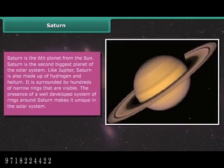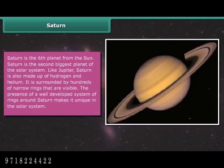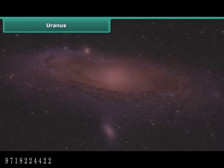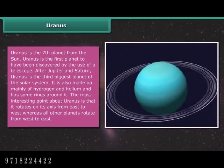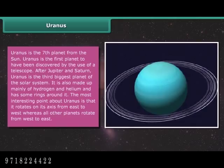Saturn is the sixth planet from the Sun and the second biggest planet of the solar system. Like Jupiter, Saturn is made up of hydrogen and helium and is surrounded by hundreds of narrow visible rings. The presence of a well-developed ring system makes Saturn unique in the solar system. Uranus is the seventh planet and the first to have been discovered by telescope. It is the third biggest planet and is also made mainly of hydrogen and helium with some rings. Uniquely, Uranus rotates on its axis from east to west, whereas all other planets rotate from west to east.